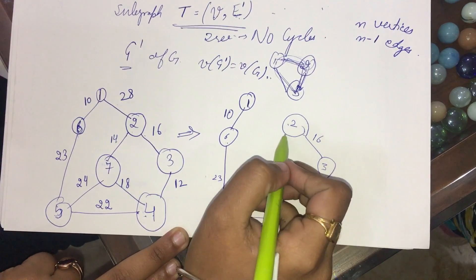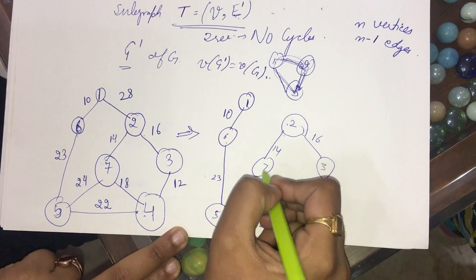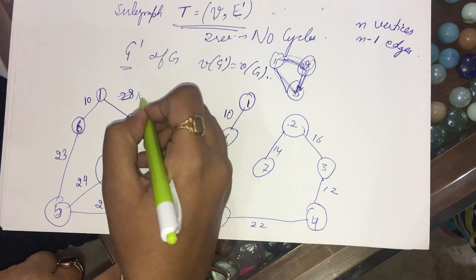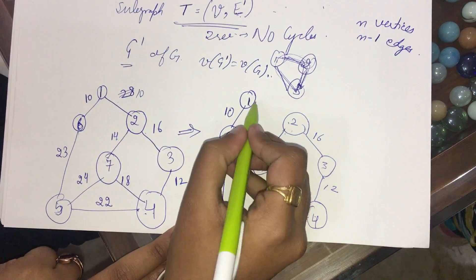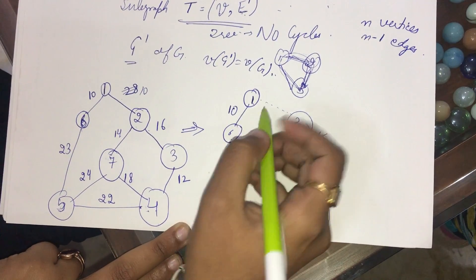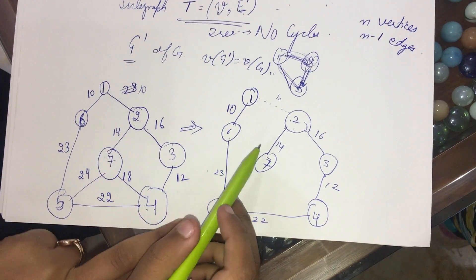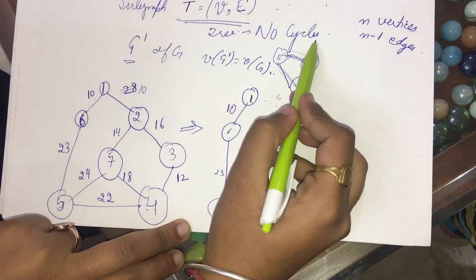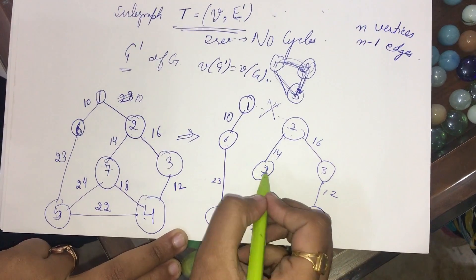But now, if 2 goes to, obviously you will say that 2 will go to 7 because the cost is small. Suppose I had 10 over here. Then also I would take 2 to 7 only. Because suppose I had taken an edge from 2 to 1 with a cost of 10, then it would have led to a cycle, and this would have violated my condition for the tree. So I will not take this one, even if it is small, and I will choose this.